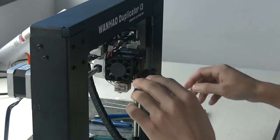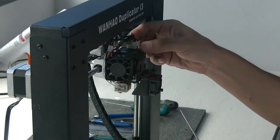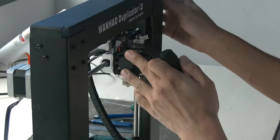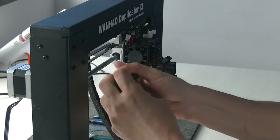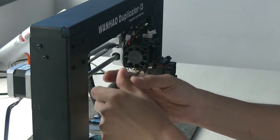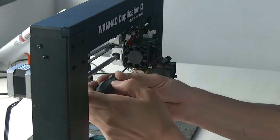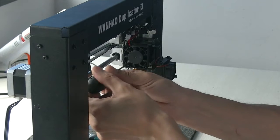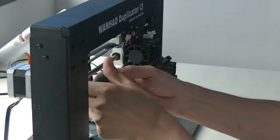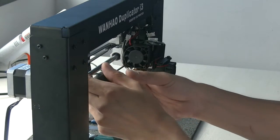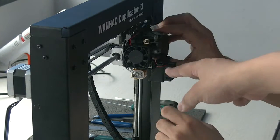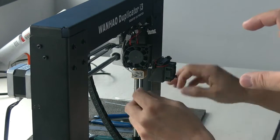First, unplug the motor cable and also unscrew the fan. By this way, we can disassemble and unmount the extruder hot end.